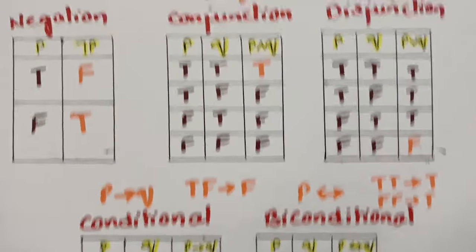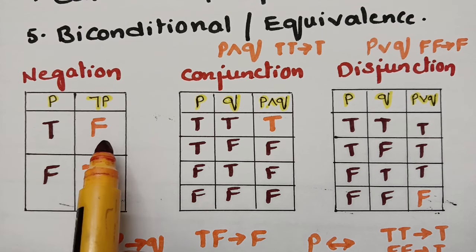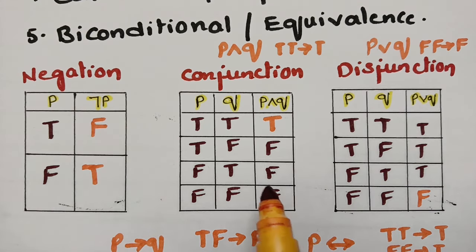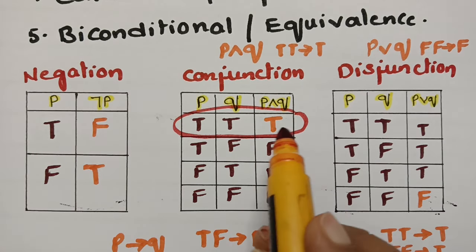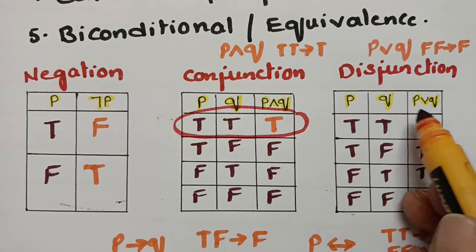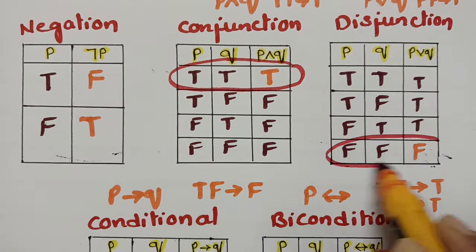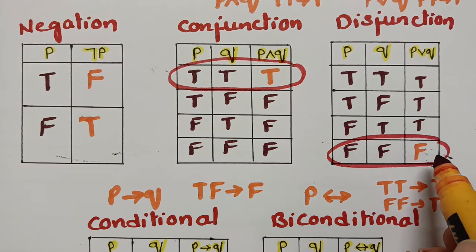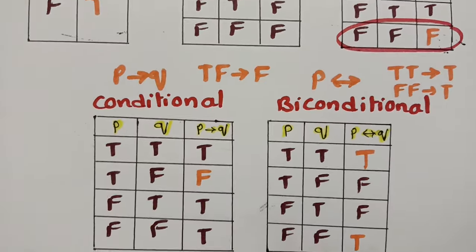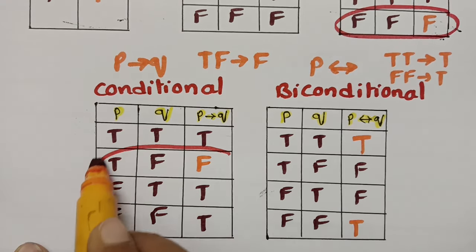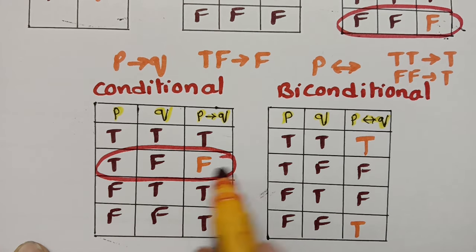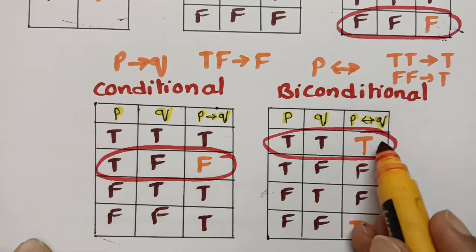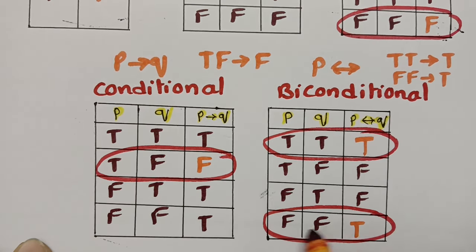Hope this is very clear. For negation: if it is true it will be false, and if it is false it will be true. For conjunction, if there are two truths, it will obviously be true. For disjunction — or — please remember: if there are two false values, the statement will be false. For the conditional truth table, true and false gives false. For biconditional, if there are two truths it will be true, and if there are two false it will also be true.